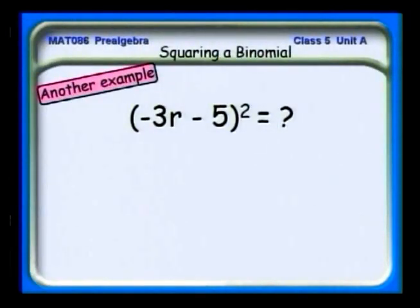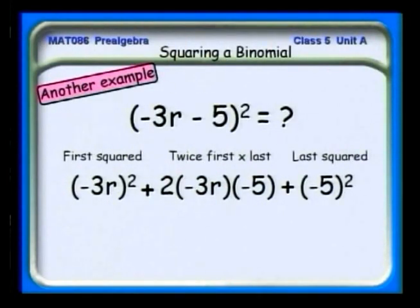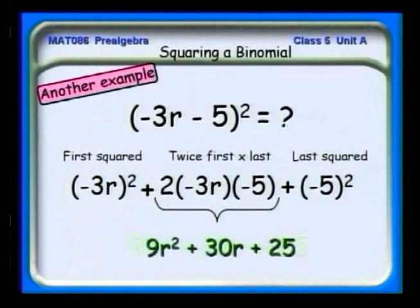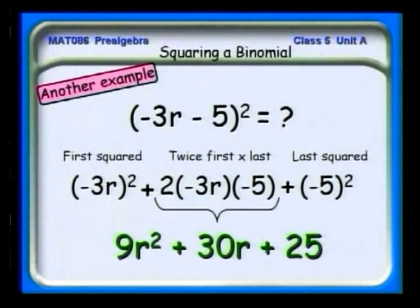Let's see how this works using (−3r − 5) squared. We square the first term. We take twice the first times the last term: twice (−3r)(−5), plus the square of the last term, (−5) squared. Now we do the math: (−3r) squared = 9r squared. (−3)(−5) = +15, twice that is 30, and there's an r, giving 30r. And (−5)(−5) = +25.